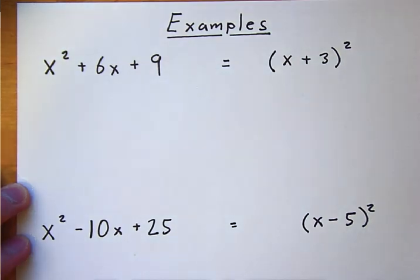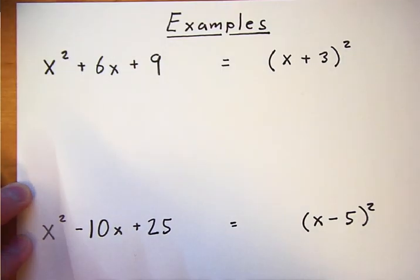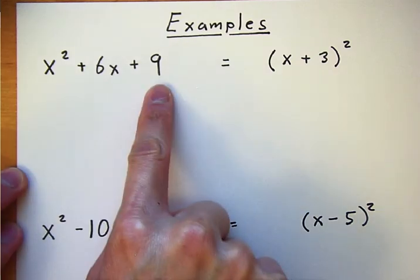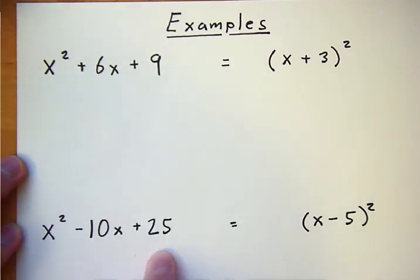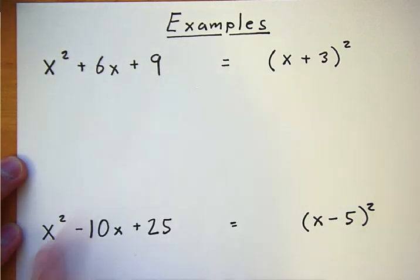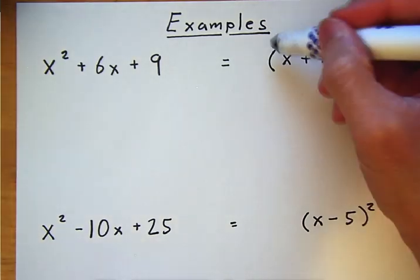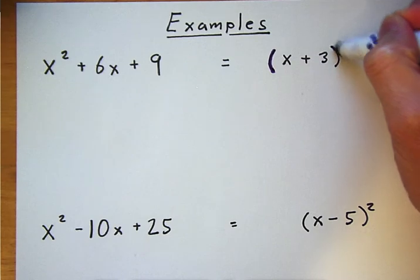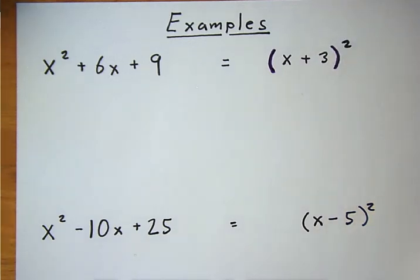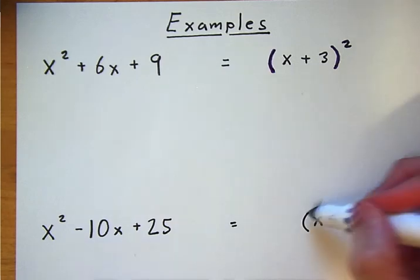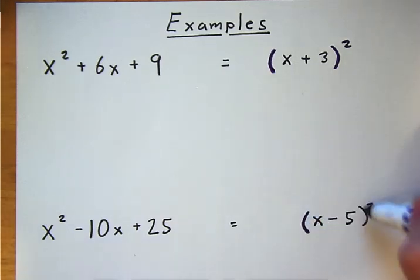Here are some examples of perfect square trinomials. Trinomial means three terms: one term, two terms, three terms. These are called perfect squares because you can write them as a parentheses squared. This one is a perfect square trinomial because you can write it as parentheses squared.